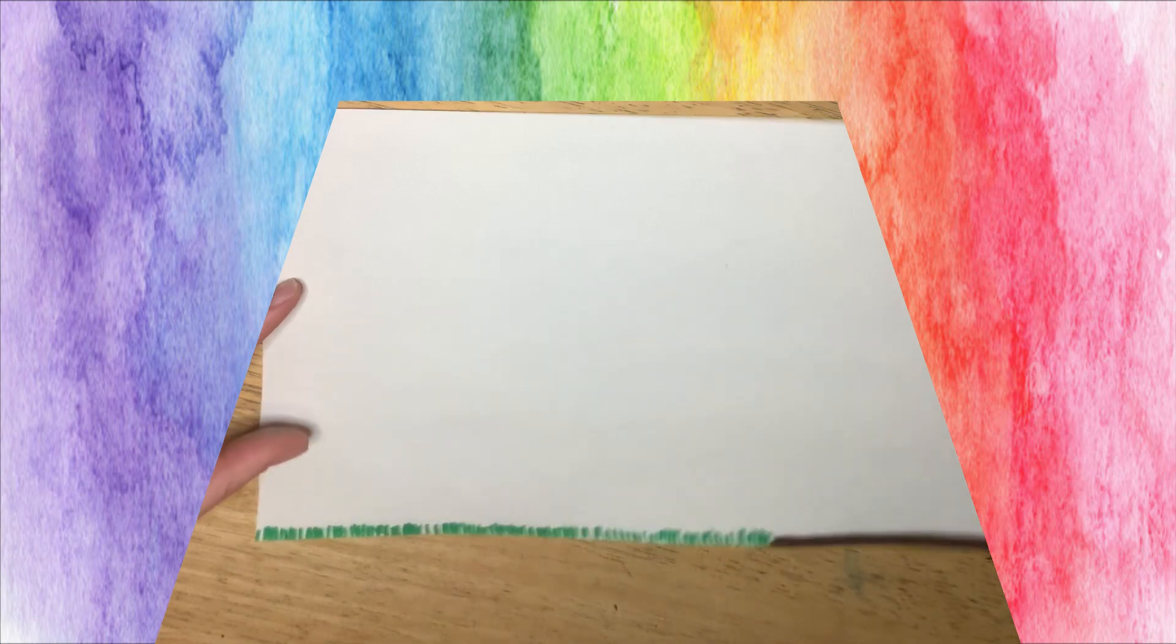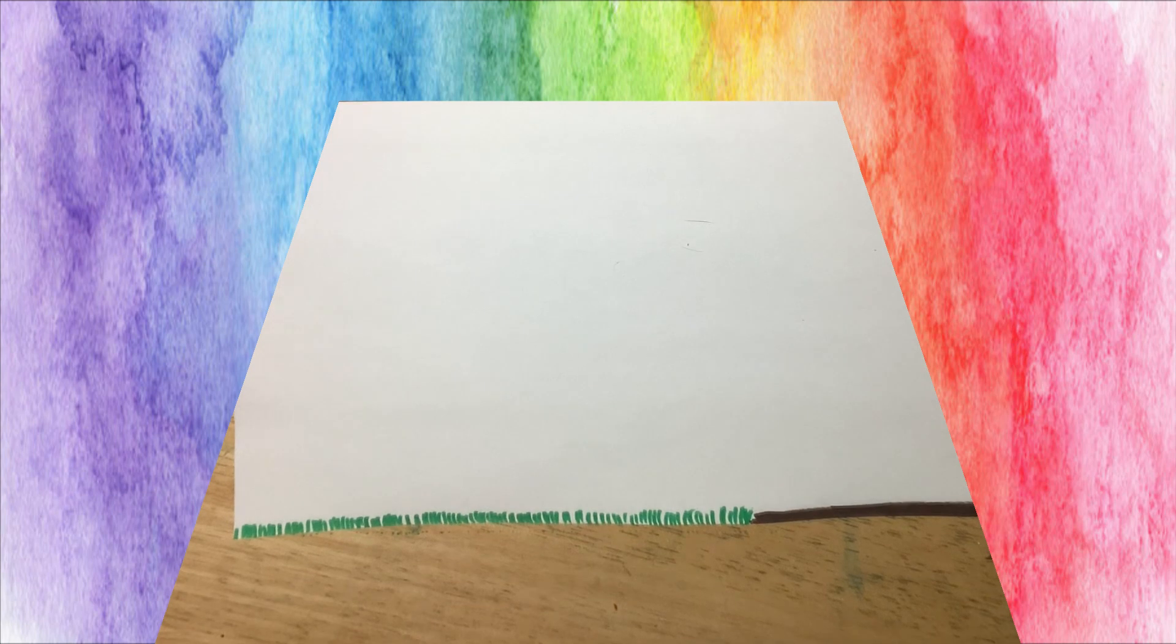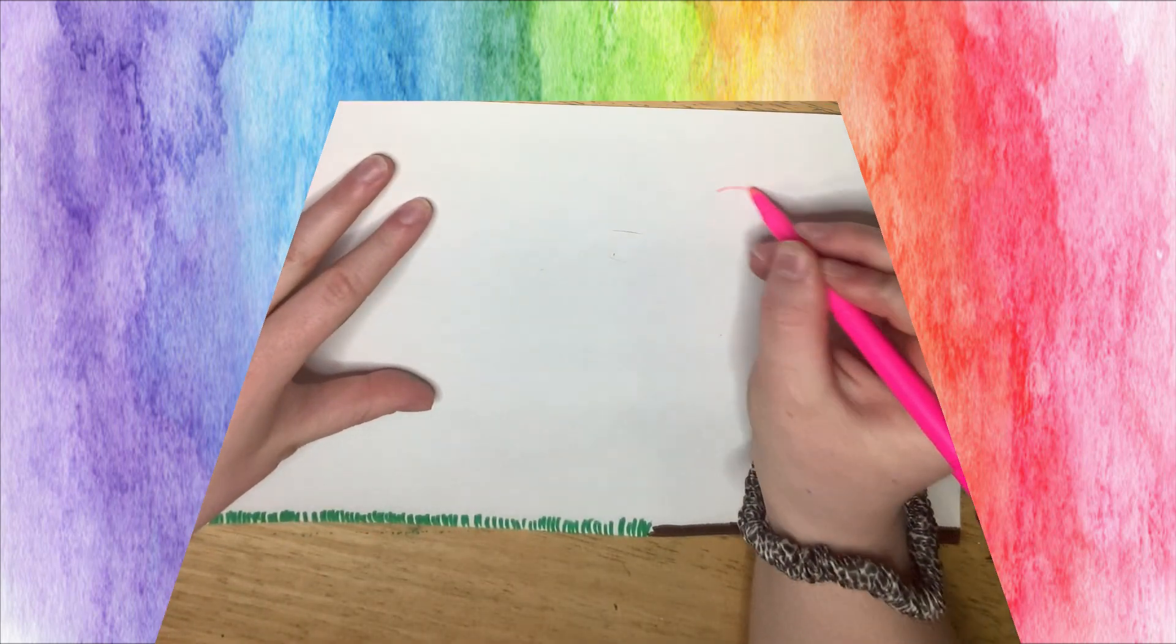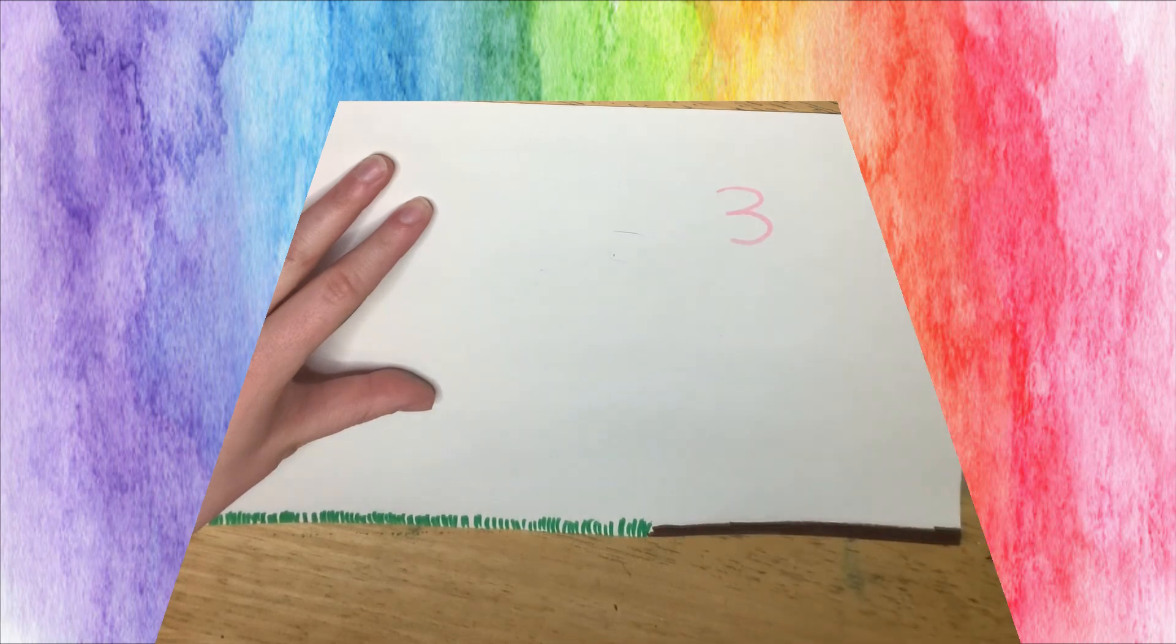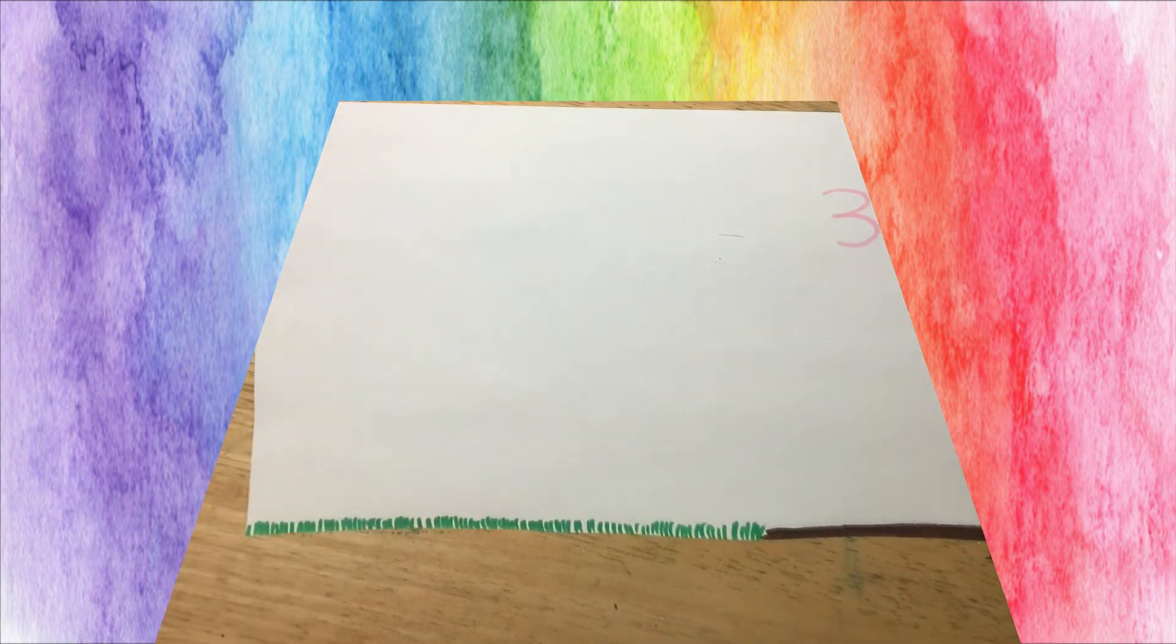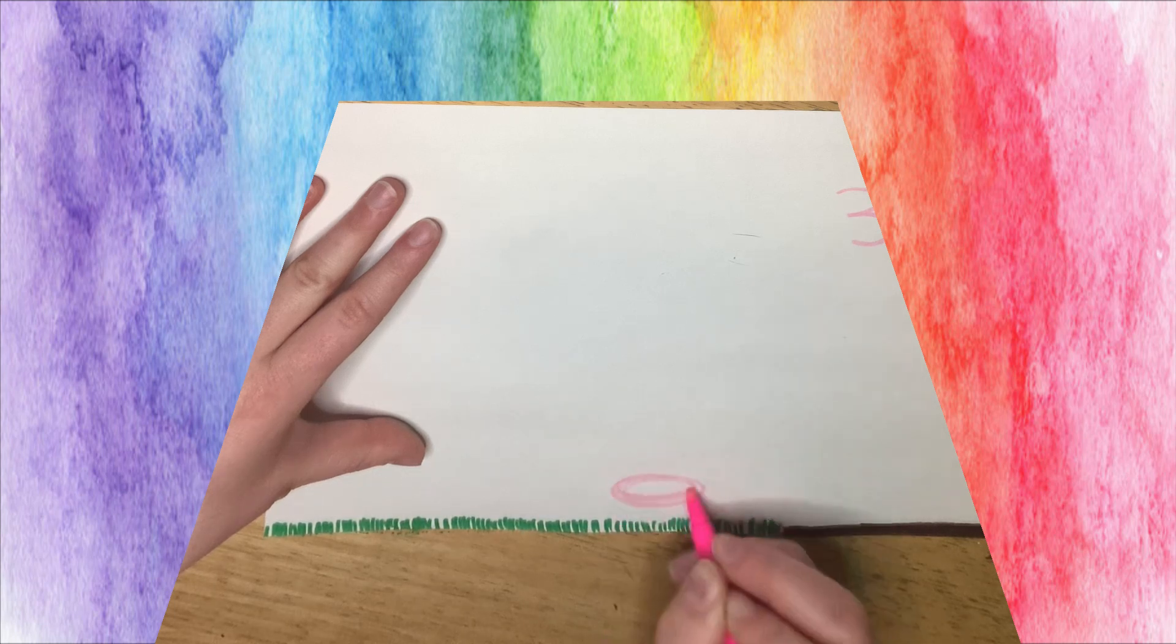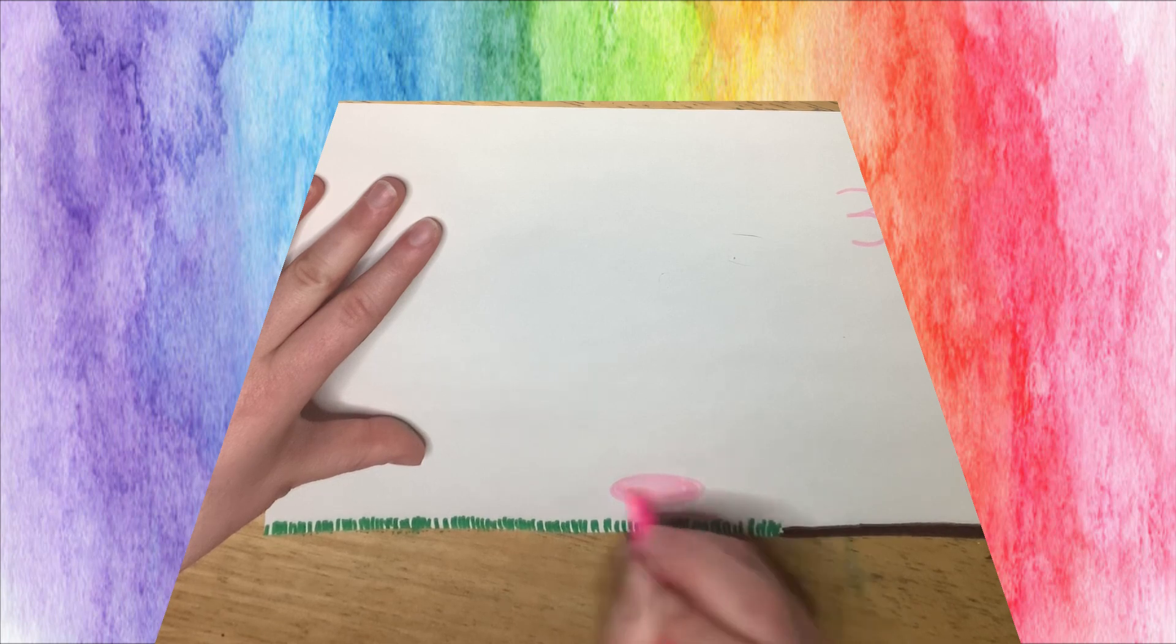Awesome job with your grass. Now it's time to draw our three little piggies. So this is when we're using pink for our pigs. And we are drawing three pigs. We are going to draw one oval for our pig's body. Color that in pink.